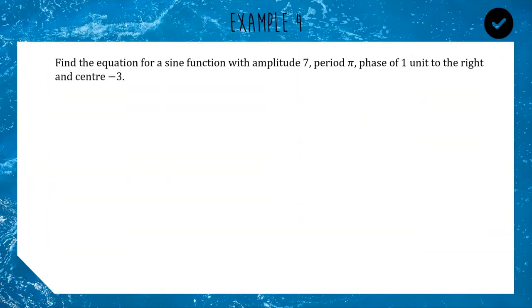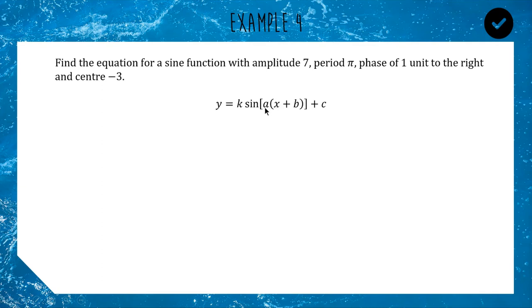Now some more language: find the equation for a sine function with amplitude 7, period π, phase of one unit to the right, and center of minus 3. Here is our generic sine function with all our unknowns. The k at the front represents amplitude; the a multiplying inside affects your period; b inside shifts left or right; and c added to the whole thing shifts up or down. As long as you know that, these questions can't really scare you. For amplitude of 7, k equals 7 — straightforward.